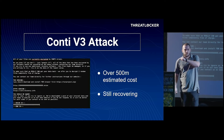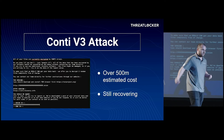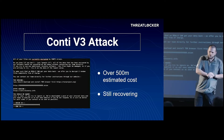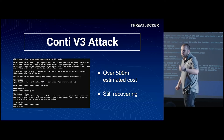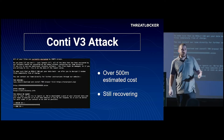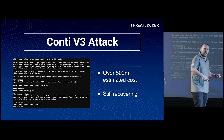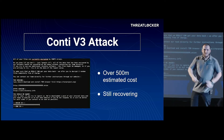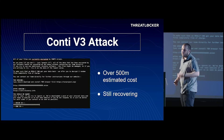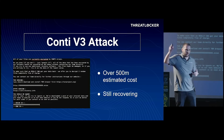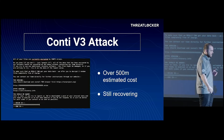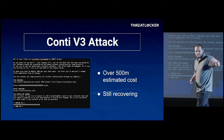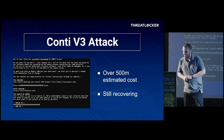They actually got in by using Cobalt Strike Beacons — they got into their servers through there. From there, they were able to utilize PowerShell and WMIC to delete shadow copies so there were no backups. They then used PowerShell to download ransomware from the cloud and run it on local systems. This is the Conti V3 attack by the Conti gang, and they are actually scaling up right now — pretty terrifying.